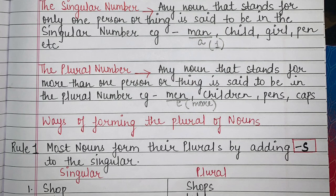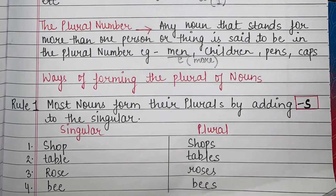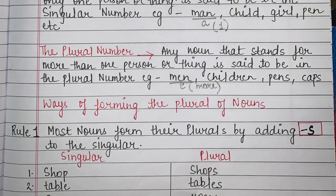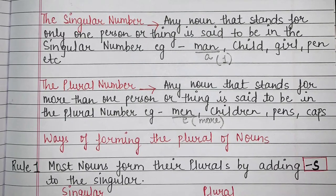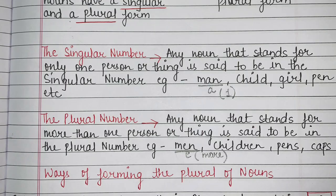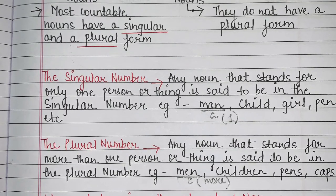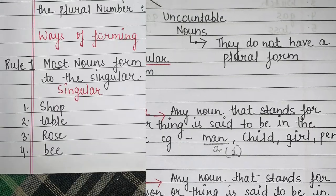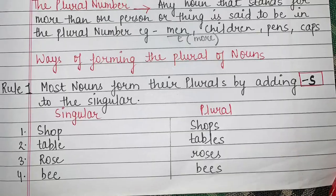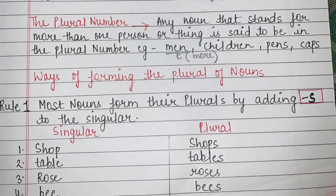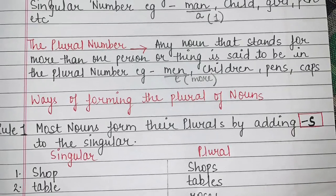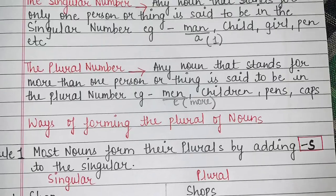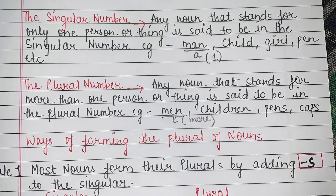Similarly, 'child' is for one child and 'children' is for more than one child. The plural of 'child' is 'children' — we never add 's' to 'children.' Child is the singular number and children is the plural; we cannot say 'childrens.' Then 'pens' — we add 's' to make it plural. So singular means one person or thing, and plural means more than one person or thing in our sentence.